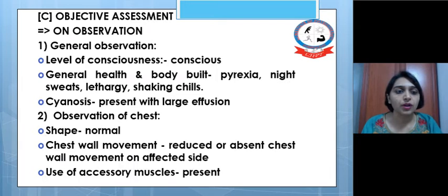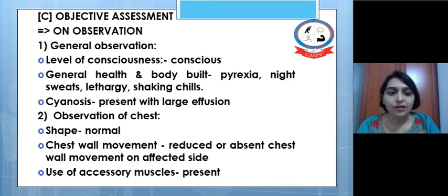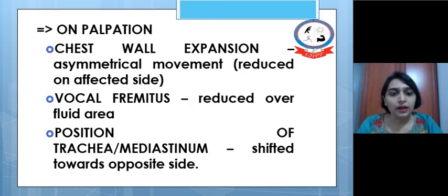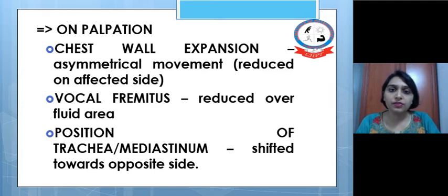The objective assessment includes observation and general observation. First, level of consciousness — these patients are usually conscious. General health and body build: the patient may have pyrexia, night sweats, lethargy, and shaking chills. Cyanosis is present only with a large effusion. On observation of the chest, shape may be normal but chest wall movement is reduced or absent on the affected side, with use of accessory muscles. On palpation, chest wall expansion is asymmetrical, especially reduced on the affected side. Vocal fremitus is reduced over the area of fluid, and the trachea or mediastinum may shift to the opposite side in large pleural effusion.